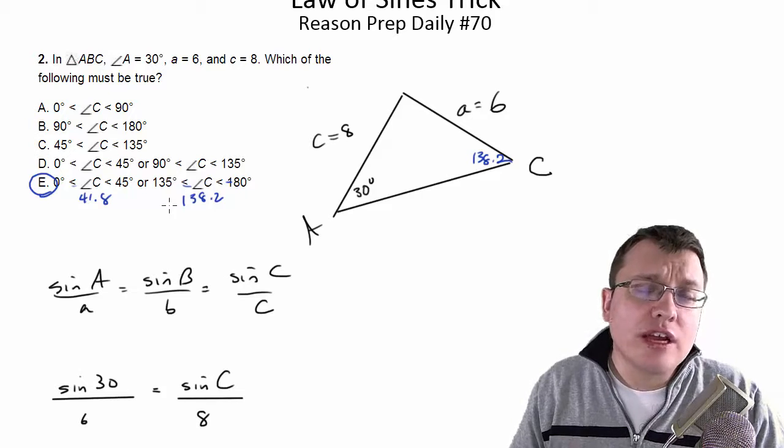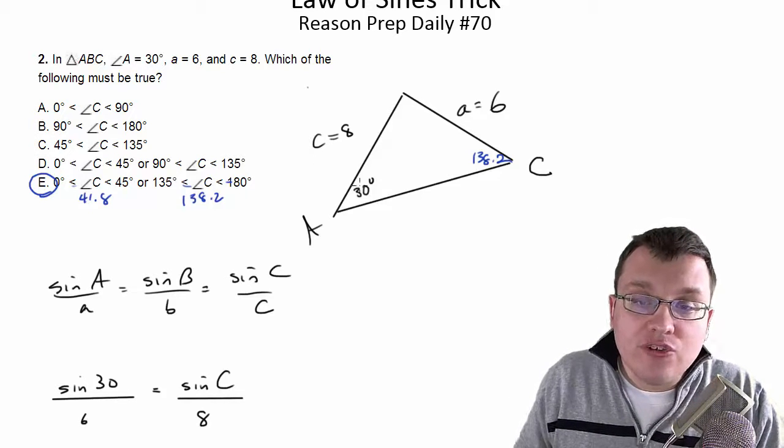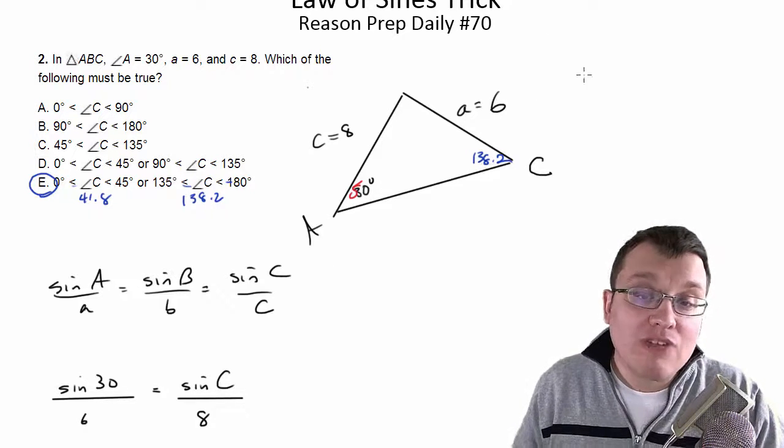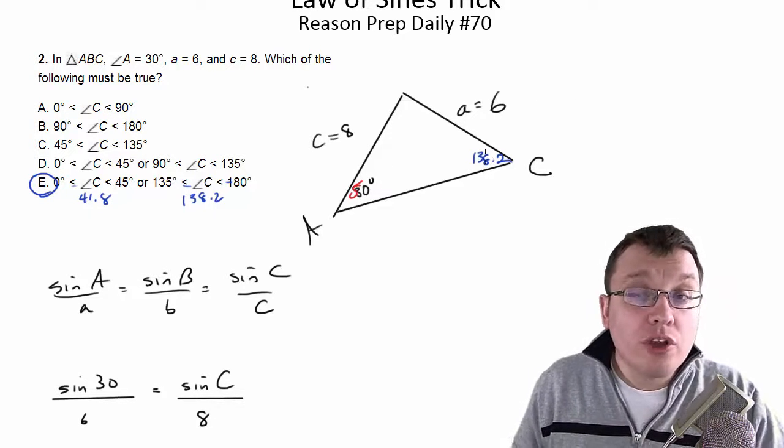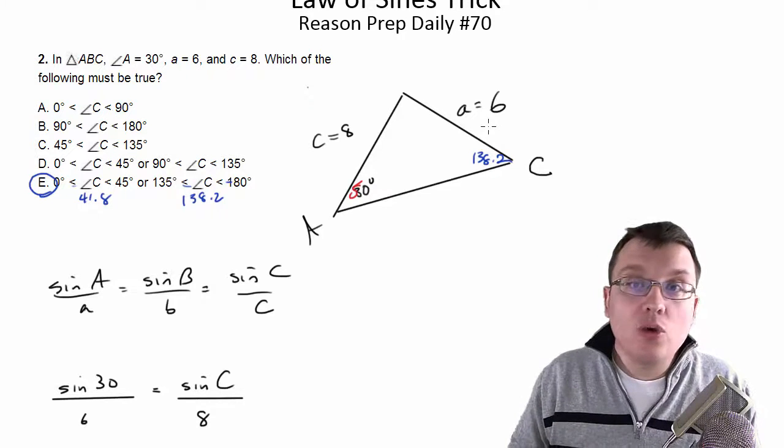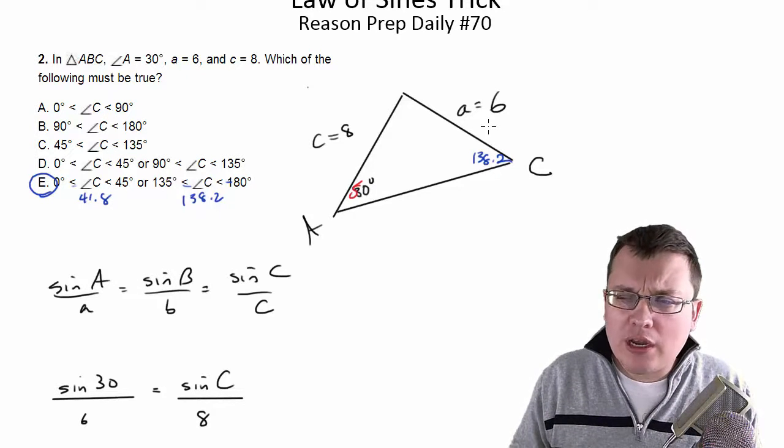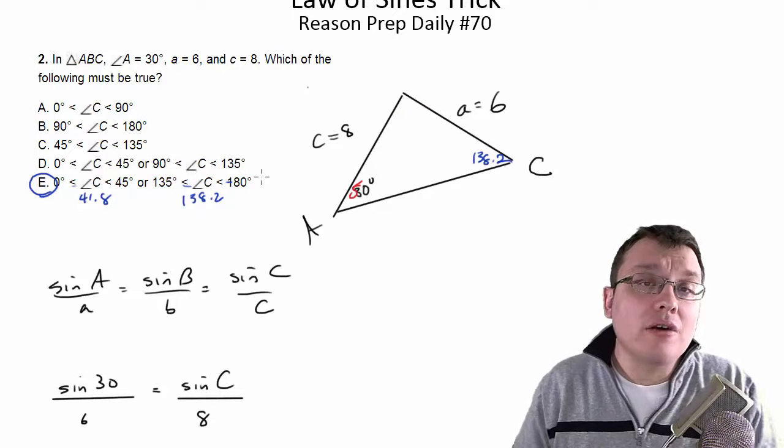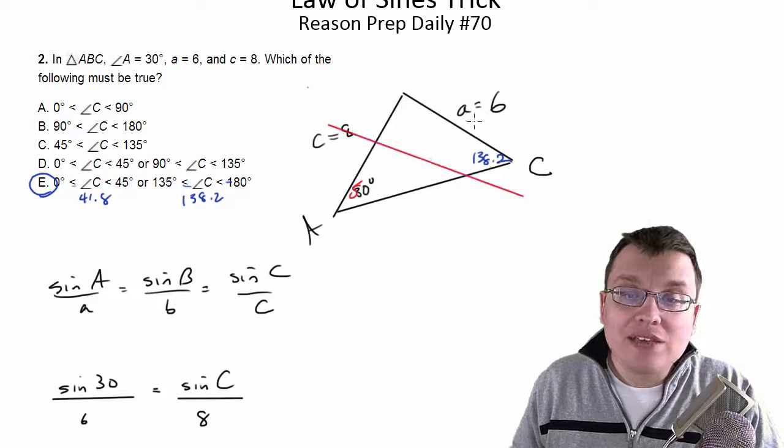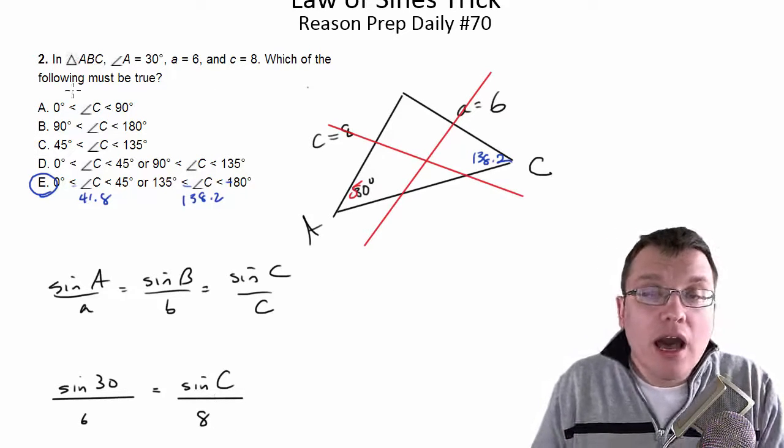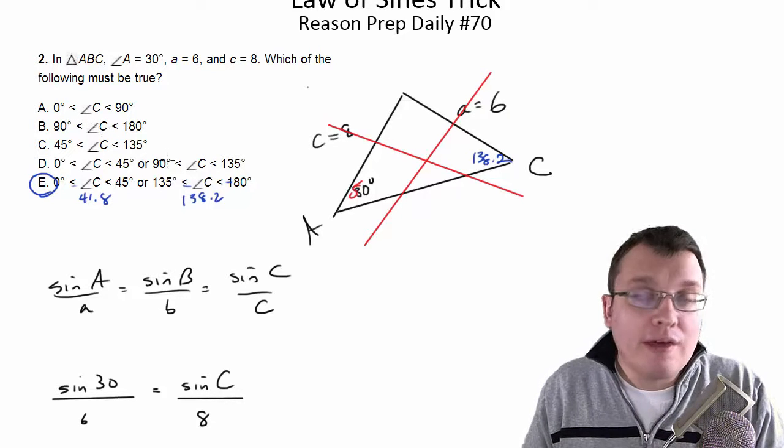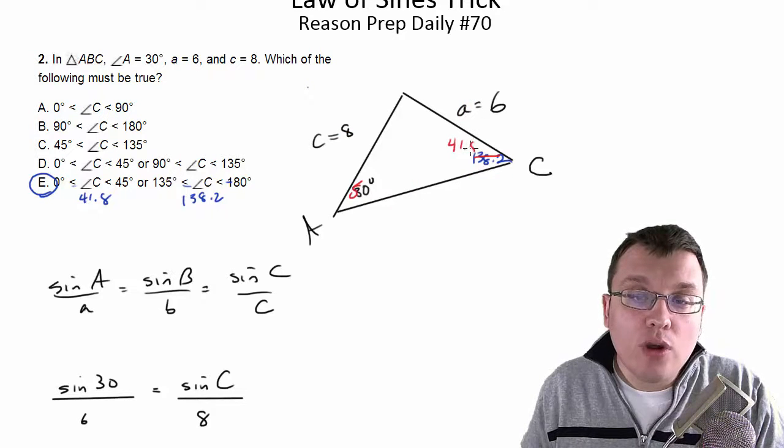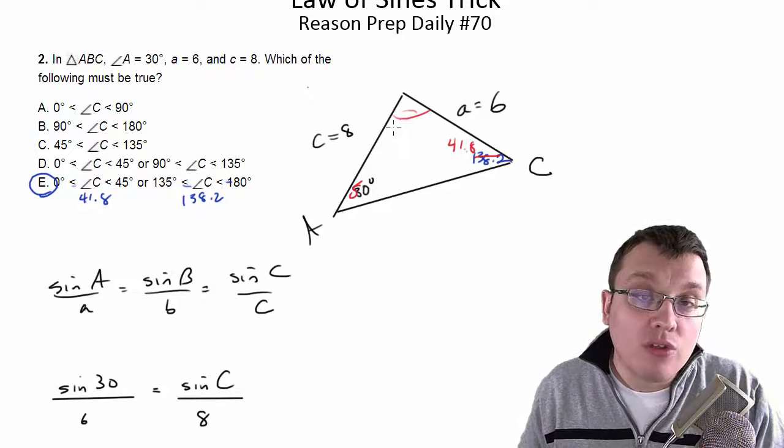How would you know if your second choice didn't work? Imagine for a second, if this were 50 degrees instead of 30. And I got 138.2 as my second answer. Notice 50 plus 138.2 is 188.2, which is bigger than 180. I don't have anything left for this third angle. So I have a triangle that's impossible. So in that case, the second triangle wouldn't work. I would only have one triangle that would work. And that would be my original 41.8 answer. Because as you can see, 41.8 plus 50 leaves me plenty of degrees left for the third angle.